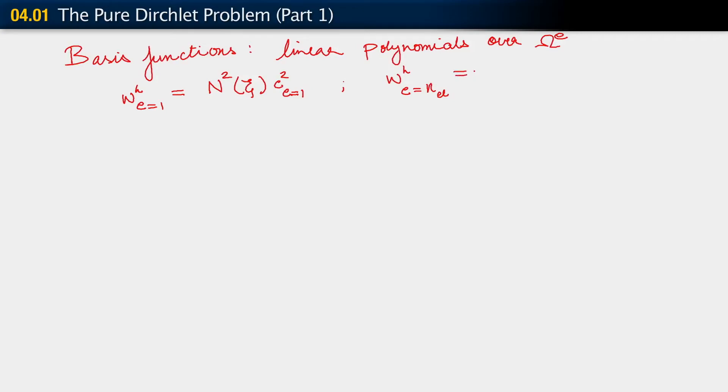And the similar sort of thing holds for element e equals n_el. Which basis function do we use for element n_el? Remember that this element is this one, element 1 is this. And so what we're seeing is that for omega_H, we use only that basis function in element 1. Element n_el, on the other hand, is going to be this one. I jumped ahead of myself by also drawing the basis function, but you get the idea. That is the basis function, the only one that we will use in element n_el. So this one is just N_1, c_1 e equals n_el. So really, this is the only difference.